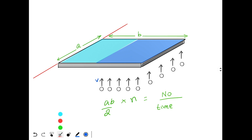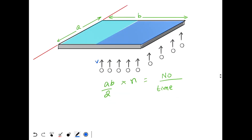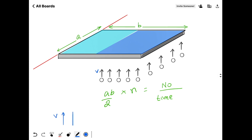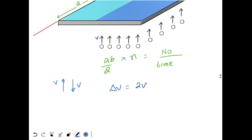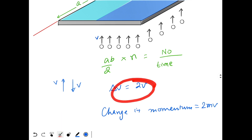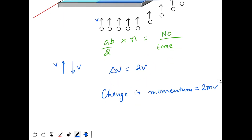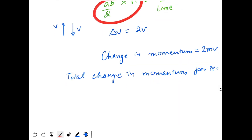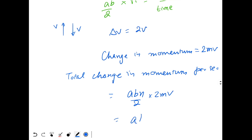Let the velocity of the balls be v. They strike the plate and bounce back — the collision is elastic — so they go up with velocity v and come back with velocity v. Therefore, delta v equals 2v, meaning the change in velocity is 2v. The change in momentum of one ball is 2mv.